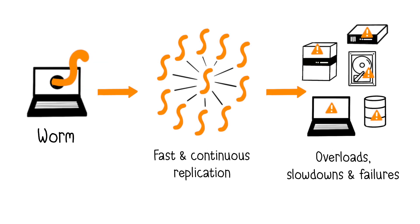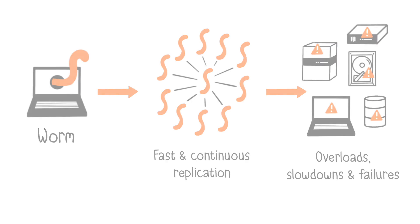Next, we have worms, which are a category of viruses, because their primary objective is to spread, often by exploiting a vulnerability, and then continuously replicate themselves. Their continuous replication can overload the disk space on your computer and consume a lot of CPU resources, thereby significantly slowing down your computer while consuming more and more of your network bandwidth. What makes worms dangerous is their ability to spread rapidly via emails, websites, or FTP servers, for example.